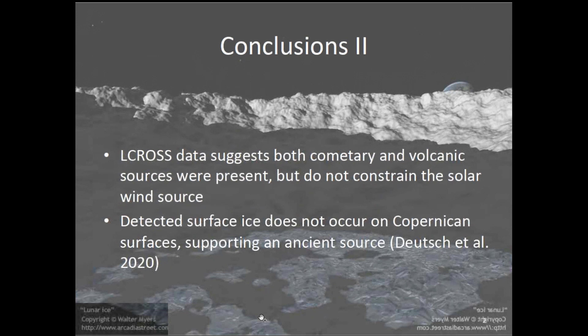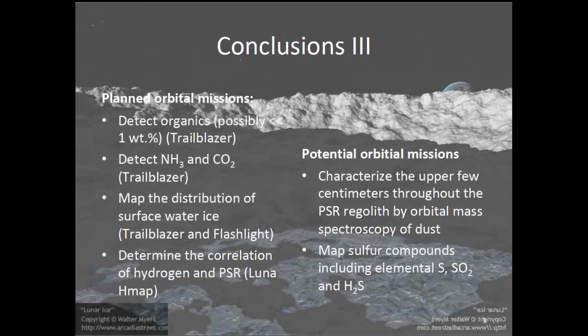LCROSS made some critical measurements. Both cometary and volcanic sources appear to be present based on the LCROSS data. The solar wind source isn't well constrained by LCROSS, but the other two sources — it looks like LCROSS may be seeing evidence of that. Ariel Deutsch has shown recently that surface ice — again a possible indicator of buried ice — does not occur on Copernican surfaces, supporting an ancient source for these volatiles.